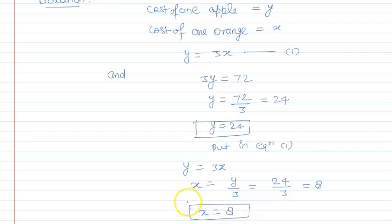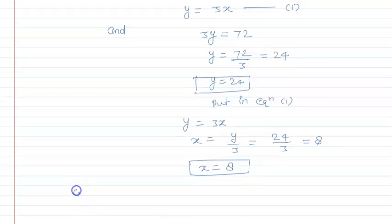So we need to find the cost of 6 oranges. Cost of 6 oranges equals - one orange costs this many rupees - so 6 into 8 equals Rs. 48. This is our final answer.